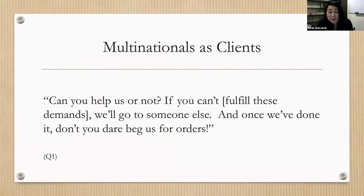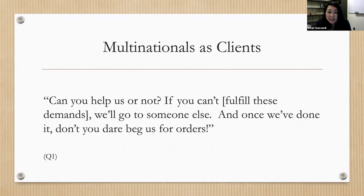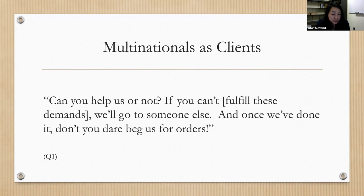Why are global south suppliers keen on having multinationals as clients even though multinationals are not always kind? Multinationals sometimes say to their suppliers: 'Can you help us or not? If you can't fulfill these demands, we'll go to someone else, and once we've done so, don't beg us for orders again.' For example, a multinational asked if a two-week order could be completed — when the supplier said no, the representative was furious: 'I gave you the opportunity and you refused.' According to my interviewee, if you take their offer, you have to serve them till death and sacrifice your other customers.